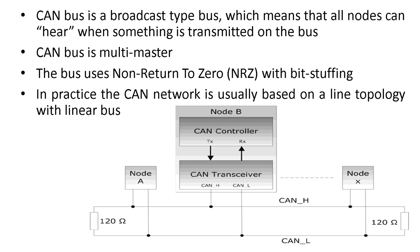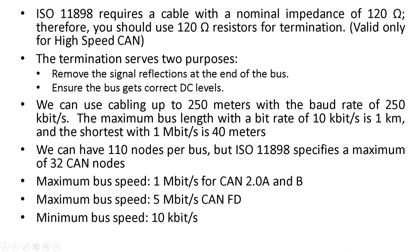The bus uses Non-Return-to-Zero and a bit stuffing mechanism. In practice, the CAN network is usually based on a line topology with a linear bus. Here we can see how the nodes are connected to the bus. ISO 11898 requires a cable with a nominal impedance of 120 ohms, so you should use a 120-ohm resistor for termination — this is valid only for high-speed CAN. Termination resistors remove signal reflection and ensure correct DC levels. We can extend the network to one kilometer if we use a low speed of 10 kilobits per second.